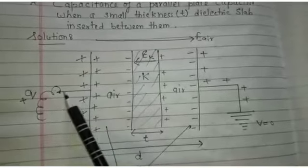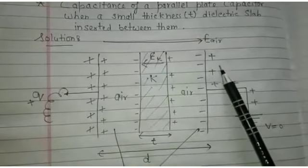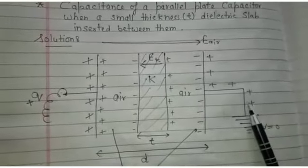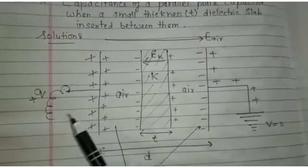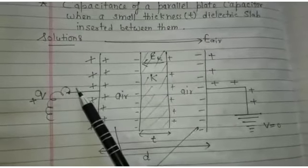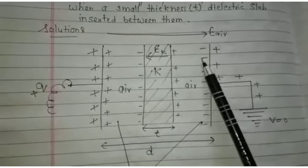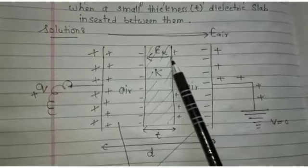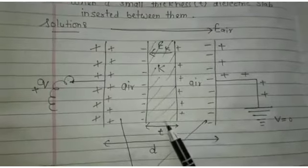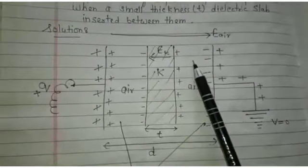First plate provide charge plus q. Second plate connected with earth. When we provide charge plus q uniformly distribute due to induction, second plate are oppositely charged. We insert a small thickness t, a dielectric medium between two plates.